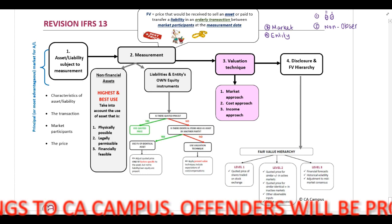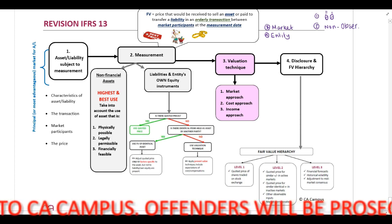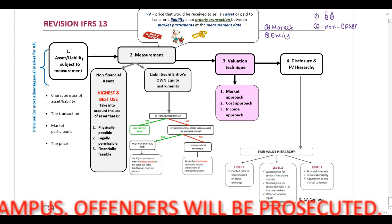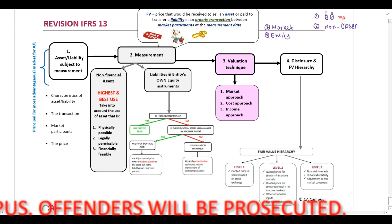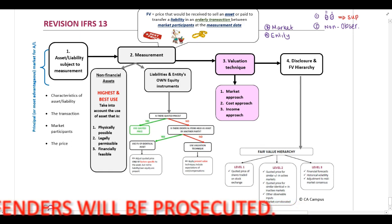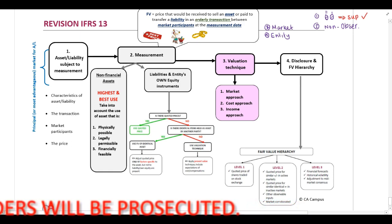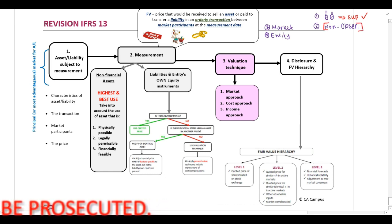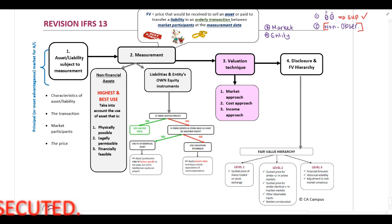If we think about these words — observable information means there is information available that we can obtain supporting evidence for; we can actually observe it. When there is non-observable information, such as for identical assets or liabilities, we need to make use of a valuation technique to calculate and measure the fair value.